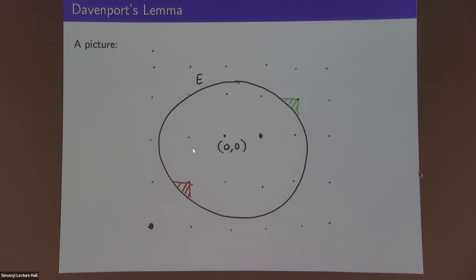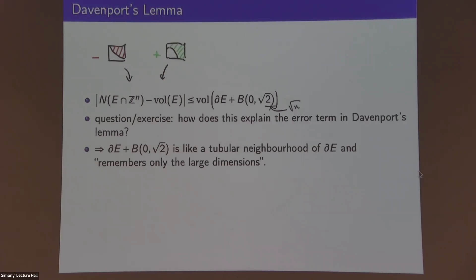If we zoom in, we can actually quantify this error explicitly. We have a region E in R², and we identify each tile with a lower left-hand corner, then count the number of tiles. So N(E) counts the points inside the region: 1, 2, 3, 4, 5, 6, 7, 8, 9, 10. The volume is the sum of little pieces of tiles. Each tile completely within E contributes 1 to both the count and the volume, so those cancel in the difference.